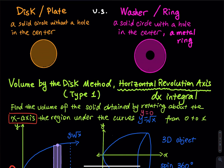Let's start with some common sense and everyday life. When you talk about volume, two words show up everywhere: the first word is disc, the second word is washer. Later on we have a word called shell. So what is a disc? Think about a plate — a solid circle without a hole in the center. Look at my picture: I have a solid circle, there is no hole in the middle. That is called a disc.